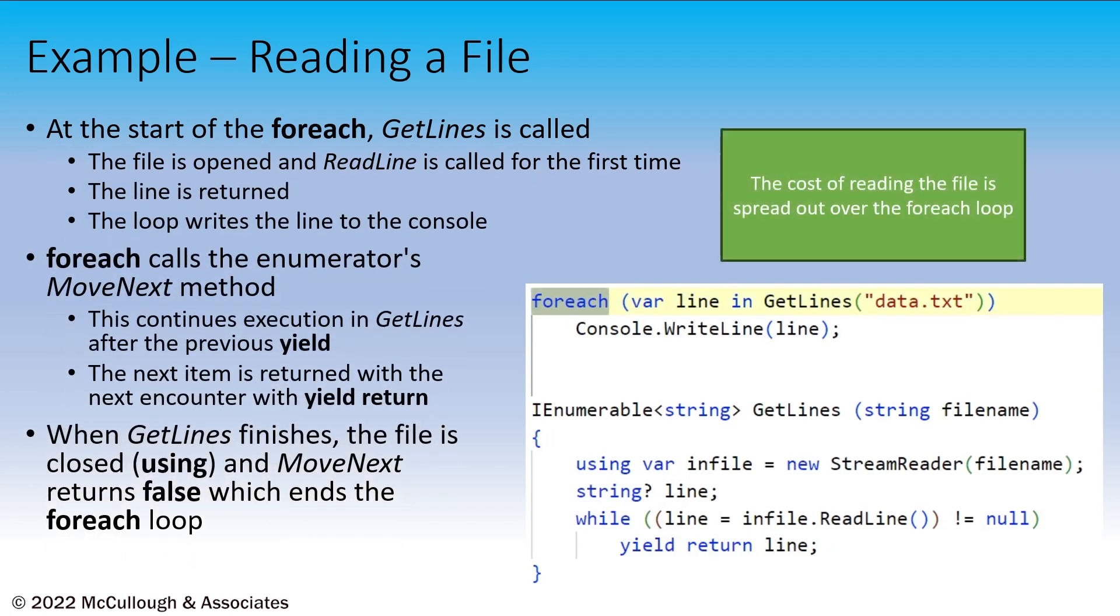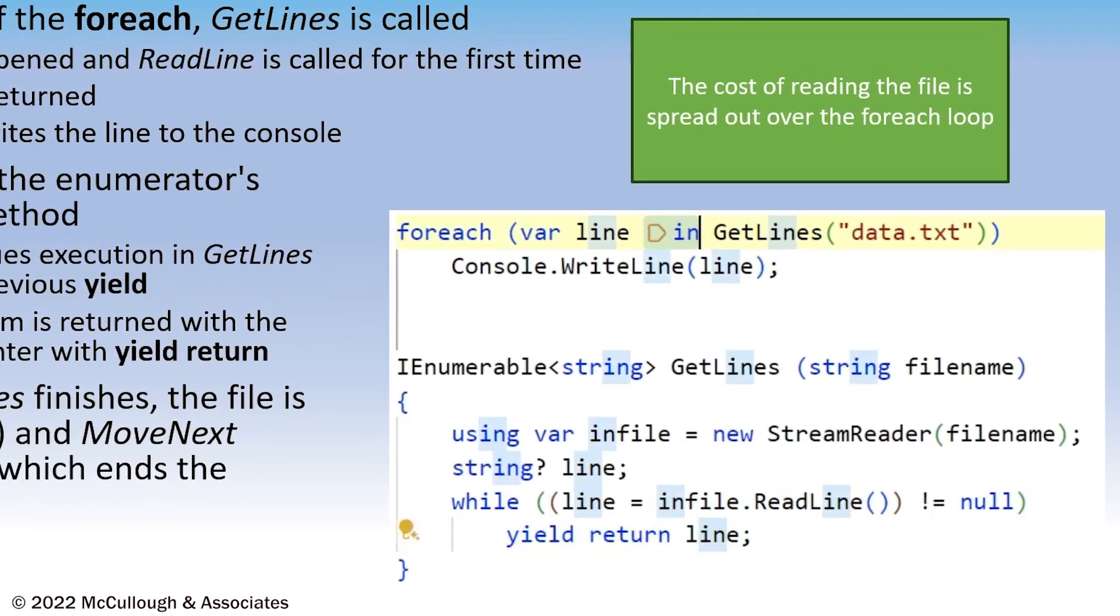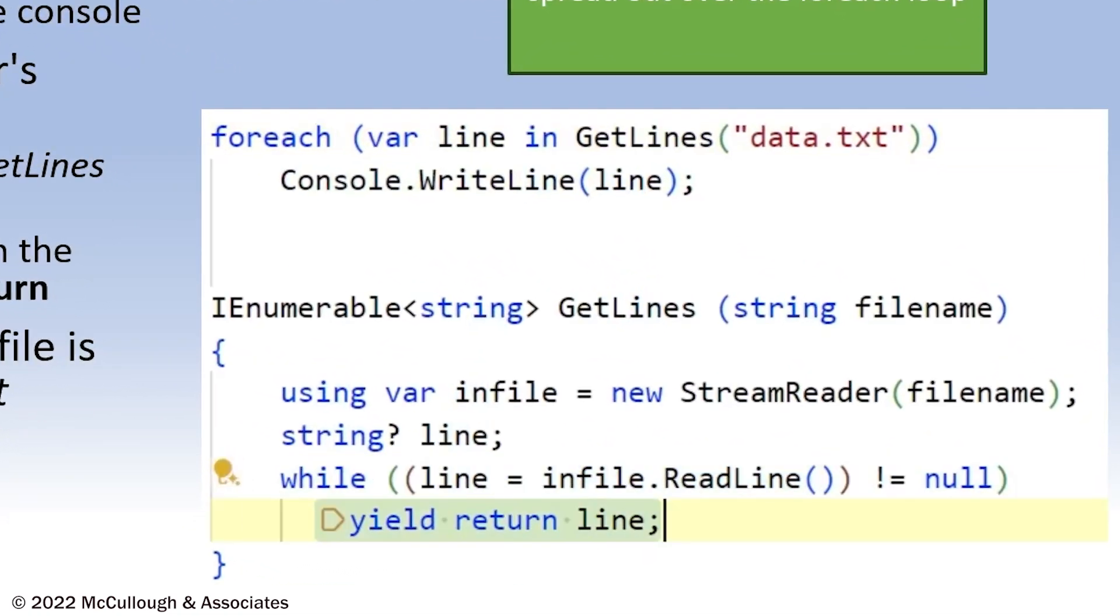In our example here, our foreach is creating the enumerator and it's calling MoveNext internally. We don't see it, but that's what's happening. The initial call executes the GetLines method, which first opens a file and begins reading data from that file. The first line is returned or produced or yielded as it's processed.